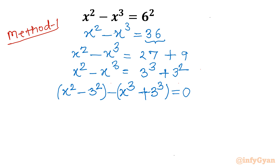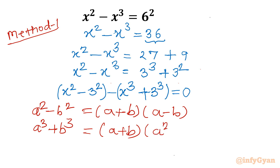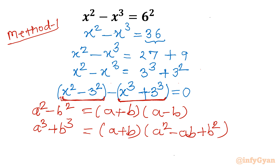Let me write the identities we will use. The difference of two squares formula: a squared minus b squared equals (a + b)(a − b). The sum of two cubes formula: a cubed plus b cubed equals (a + b)(a squared − ab + b squared). I will apply the sum of two cubes to the cubic part and the difference of two squares to the square part.